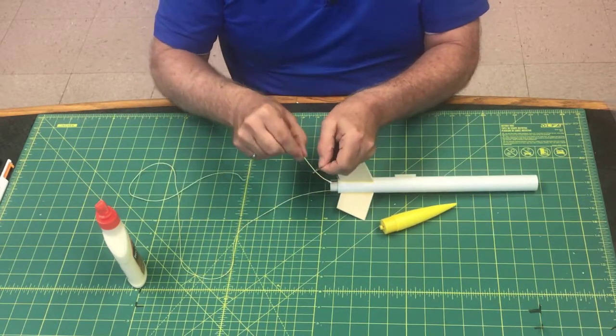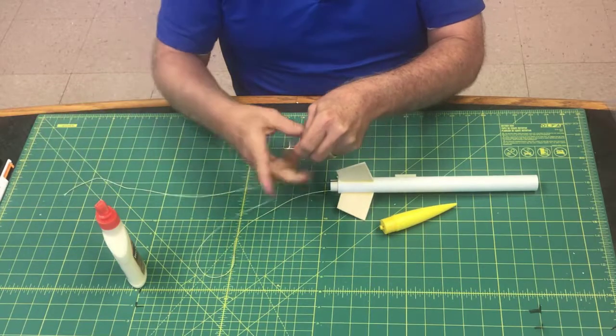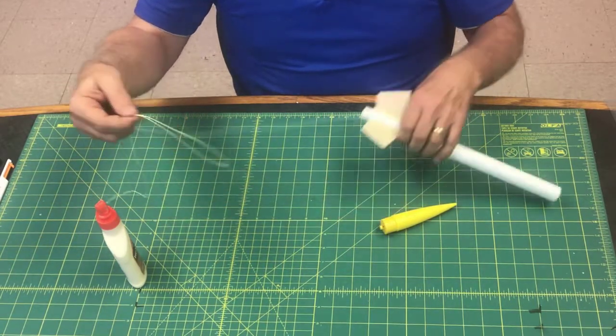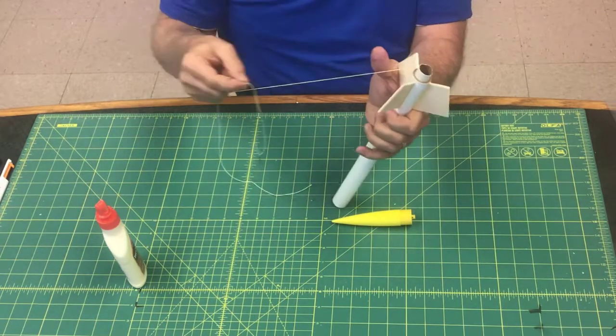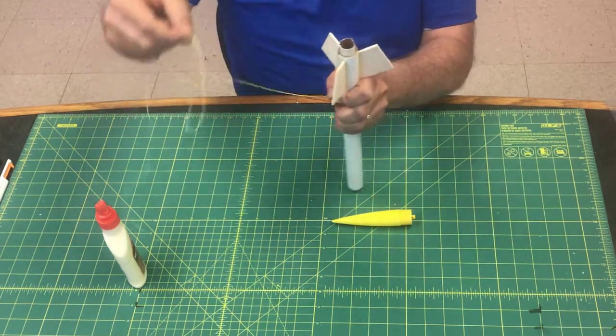Take your paper clip and put your shock cord through the paper clip, so you've got just a little loop with your paper clip. Just take your paper clip, put it on the end here and feed that through, and let the paper clip just pull this all through.